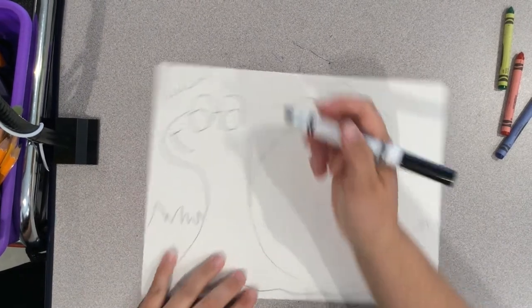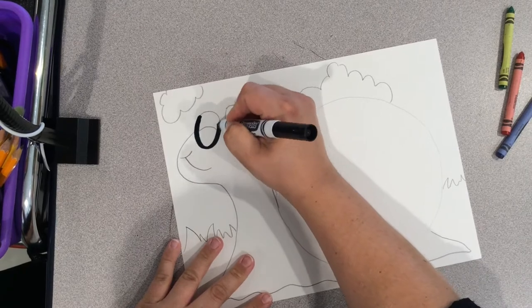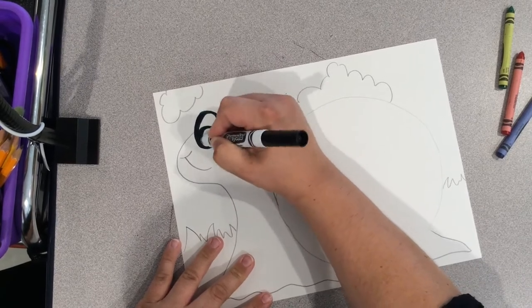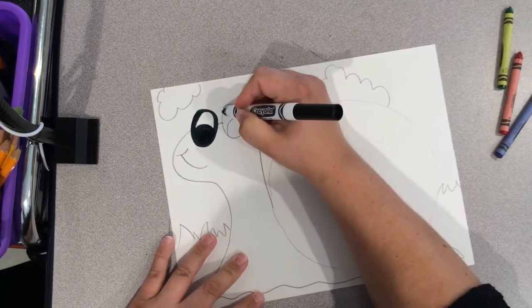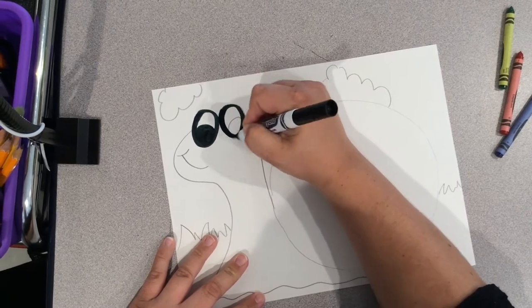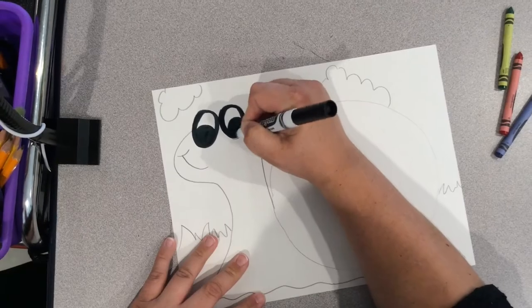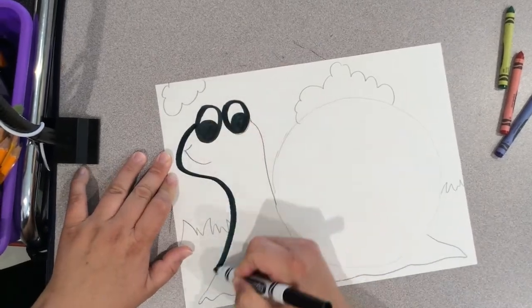Pick up that black marker, use the side to get a nice bold line and go ahead and trace your pencil lines. Now, if you have a Sharpie, you could totally use a Sharpie at home. I like using a marker just to make those lines nice and bold.